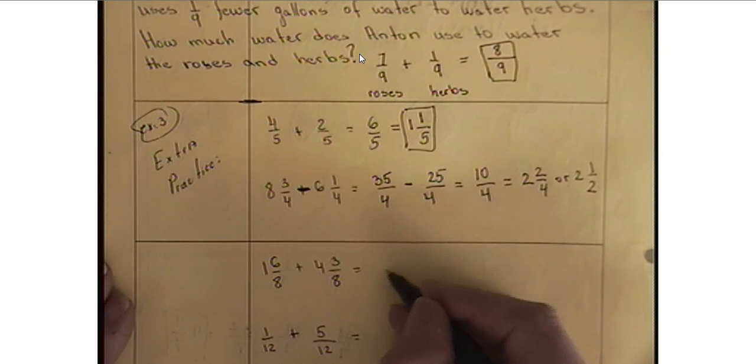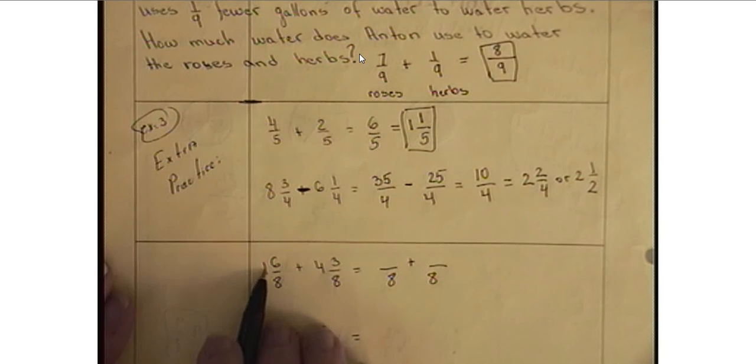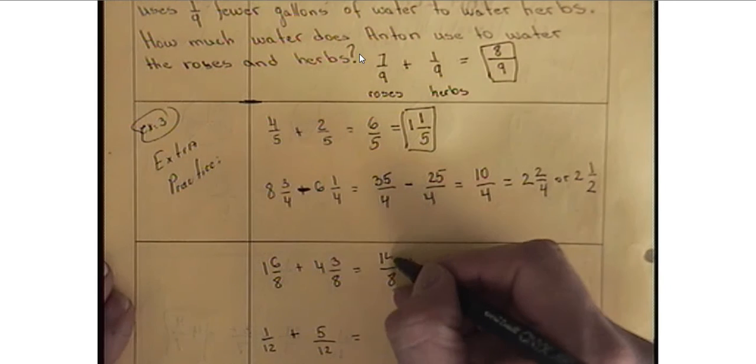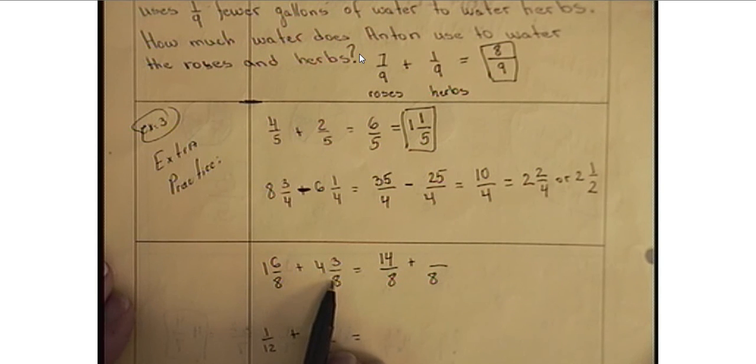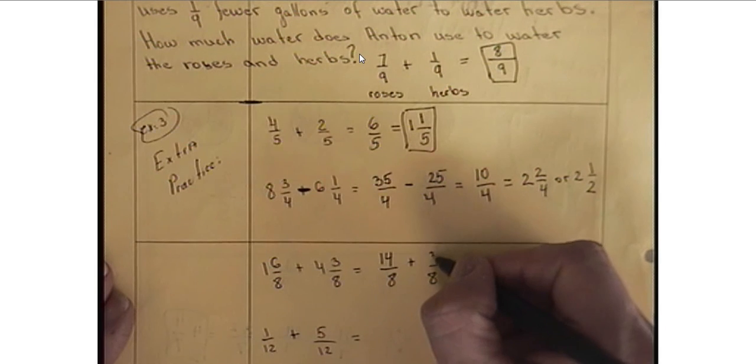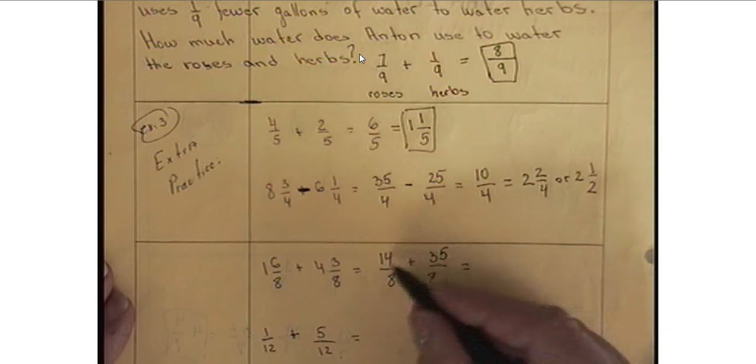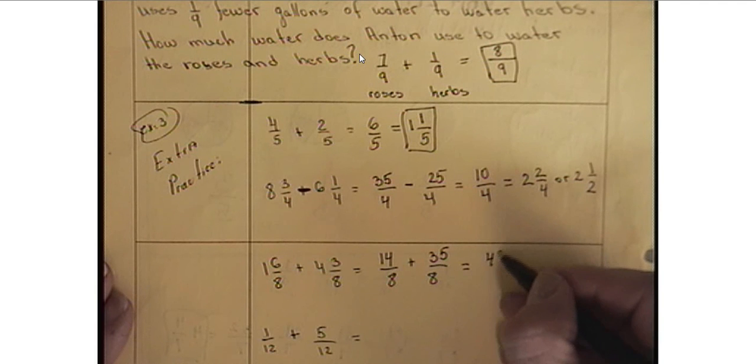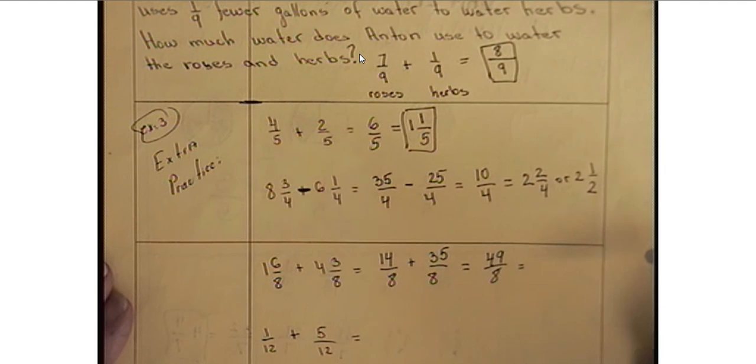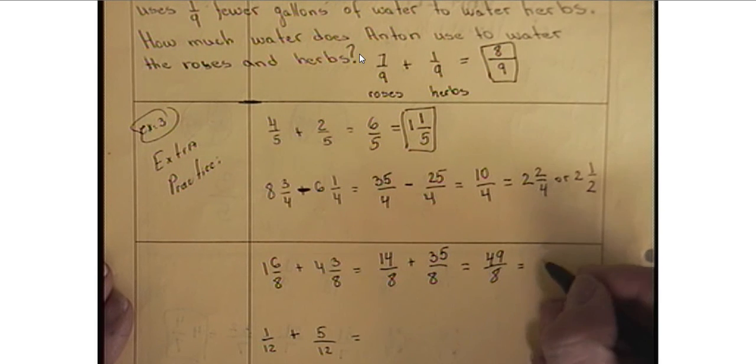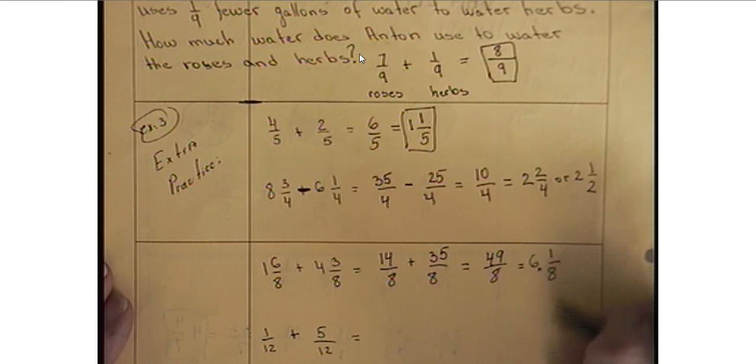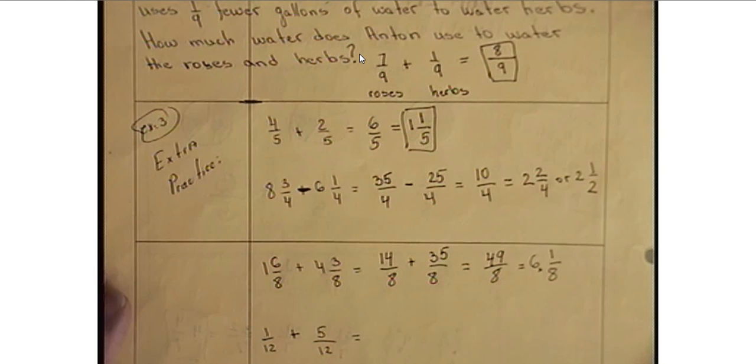Next one. We have again two numbers with common denominator of 8 plus sign between 1 times 8 is 8 plus 6, 14/8 and 4 times 8 is 32 plus 3 will give us 35/8. Adding those two numbers we get 49 over 8. So 8 goes into 49 6 times, right? 6 times 8 is 48. So 6 times 48, the difference between 48 and 49 is 1. So 6 and 1/8 will be my final answer here.